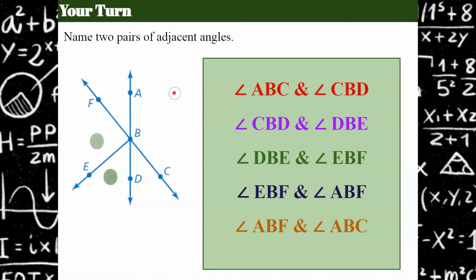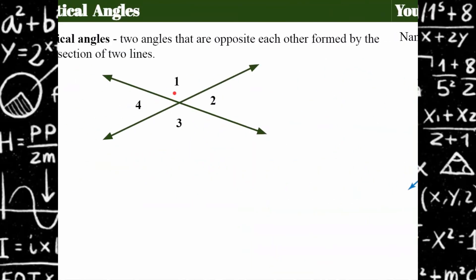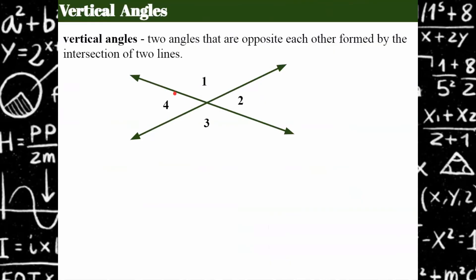And then we have DB and EDF — giving you a whole other visual here. Those are adjacent angles.